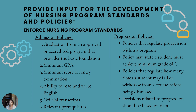Policies that may regulate how many times a student may fail or withdraw from a course should be included, especially as it relates to a student being dismissed from the program. Finally, decisions should be based on data — quantitative and not qualitative — and that's just to prevent ambiguity or the perception of unfair, unequal treatment among students.